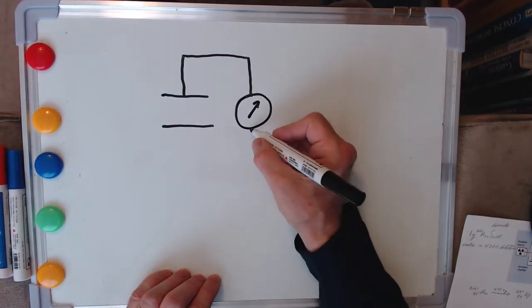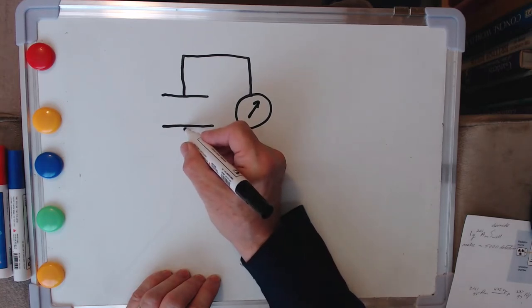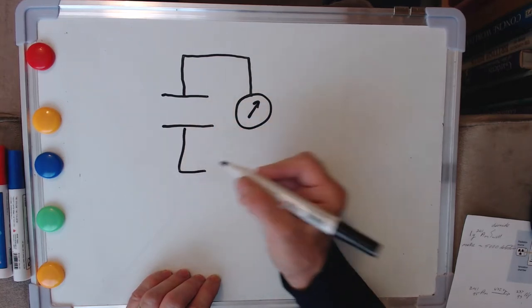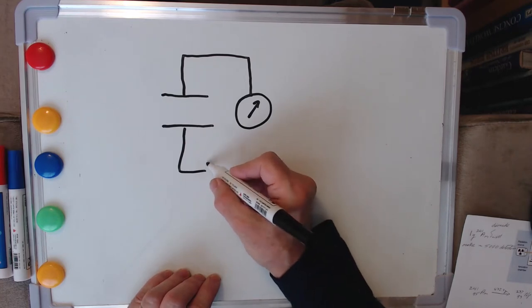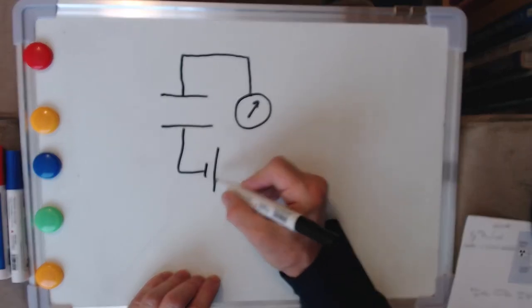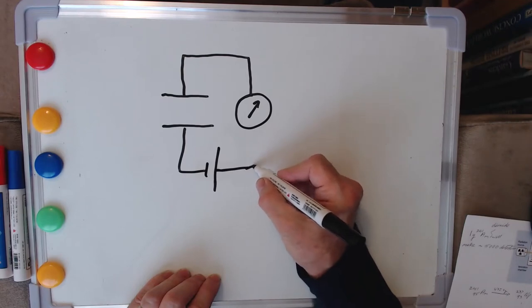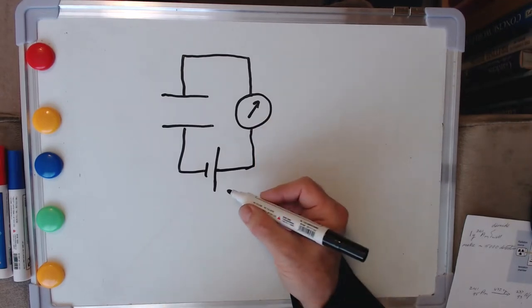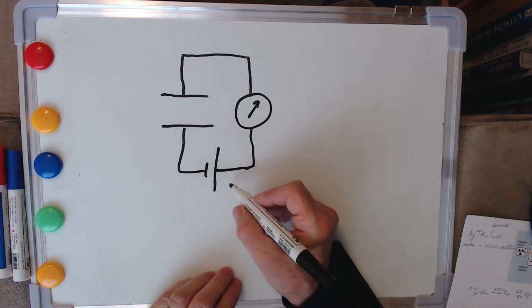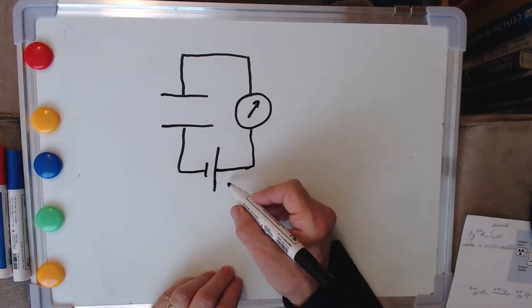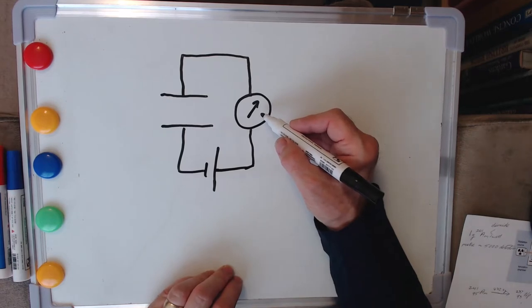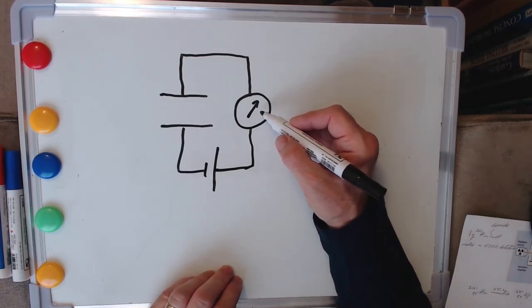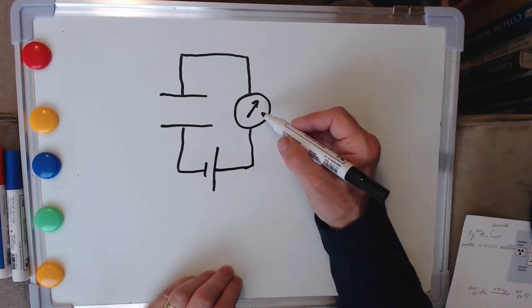There's something that measures current flowing and then somewhere down here there's our battery. This is our standard symbol for a battery, and usually at least the ones in my house these tend to be 9 volt batteries. There's no needle on a dial or anything to look at. This is basically a piece of clever circuitry.